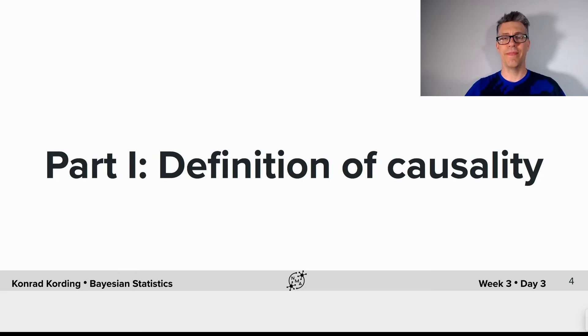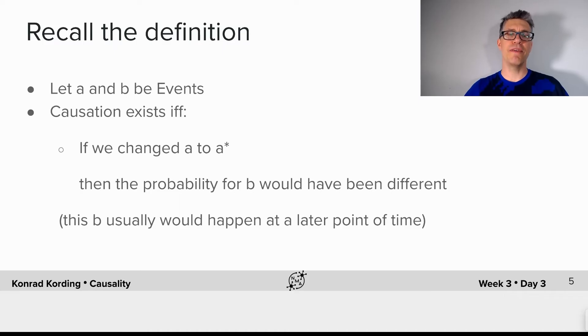So, part one, the definition of causality. Let's recall the definition. Let a and b be events. Causation exists if and only if, if we changed a to a star which is a different value, then the probability for b would have been different. This b would usually happen at a later point of time.